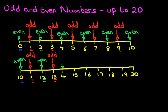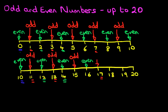14 ends in 4 — that is an even number, and we can do this right the way across. 15 is odd. What about 16? 16 is even. Number 17 ends in 7 — all numbers ending in 7 are odd. Number 18 ends in 8 — all numbers ending in 8 are even numbers. Number 19 ends in 9 — therefore, all numbers ending in 9 are odd.